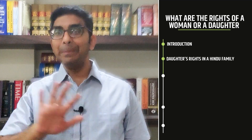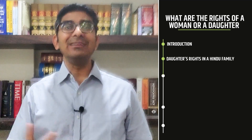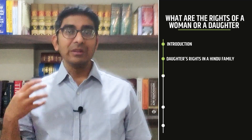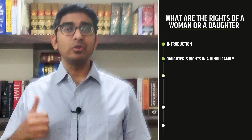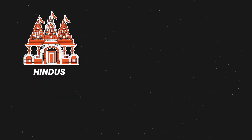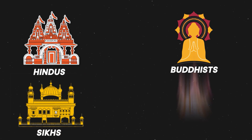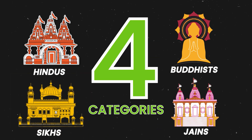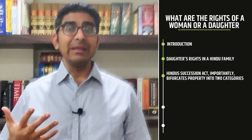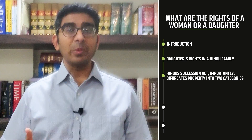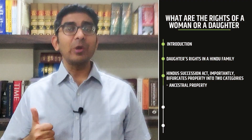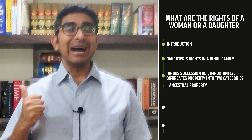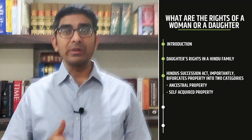That is basically the background in which the entire discussion of daughter's rights is happening. The Hindu Succession Act applies to Hindus, Buddhists, Sikhs and Jains — these four categories. And the Hindu Succession Act importantly bifurcates property into two categories: one is ancestral property, and the other is self-acquired property.